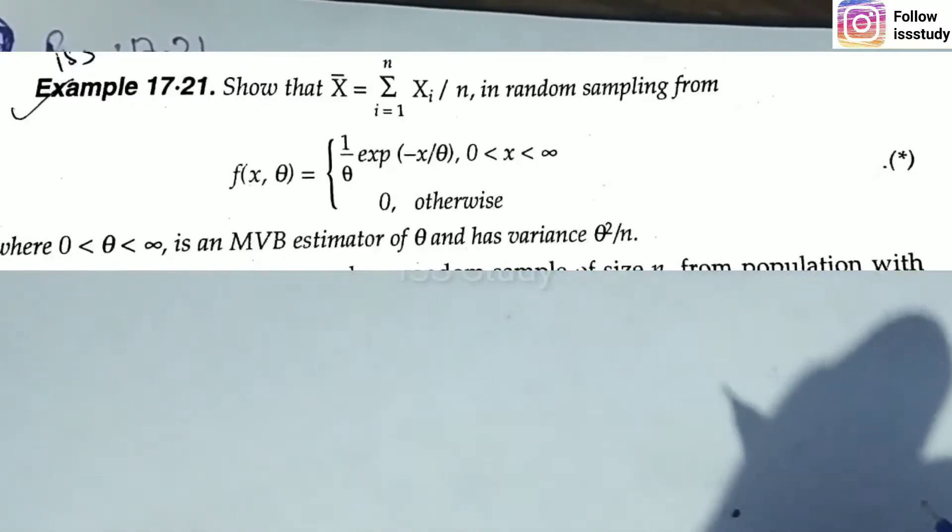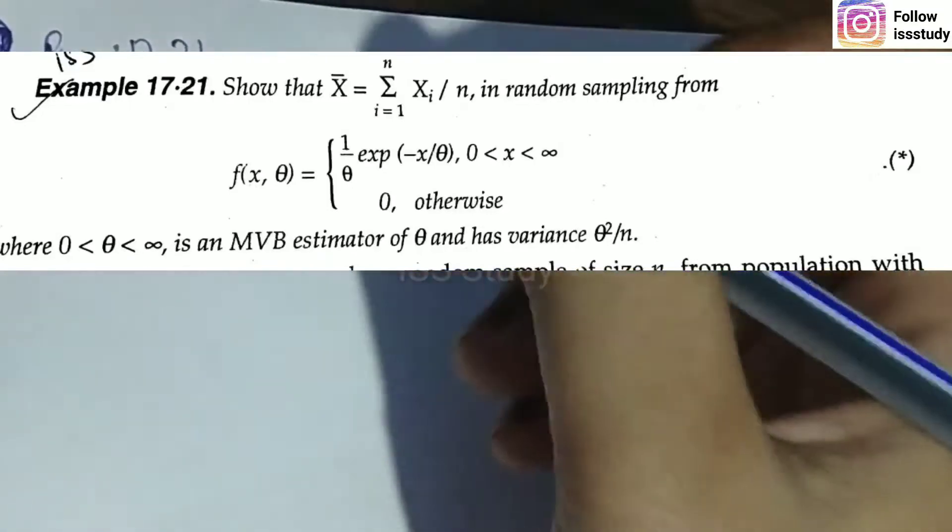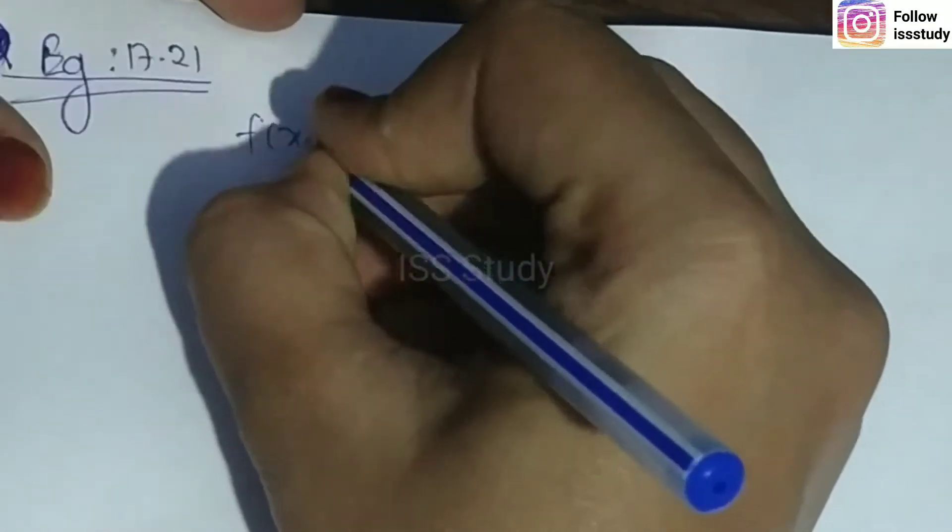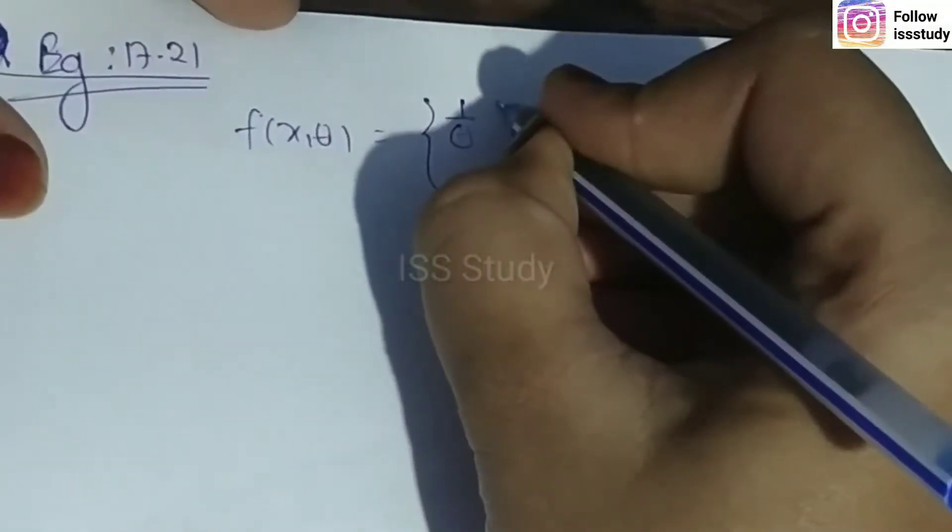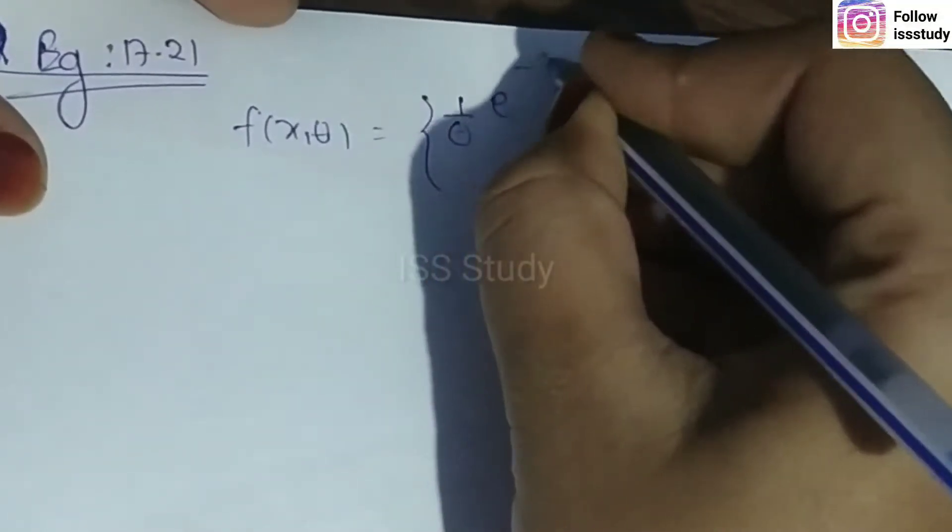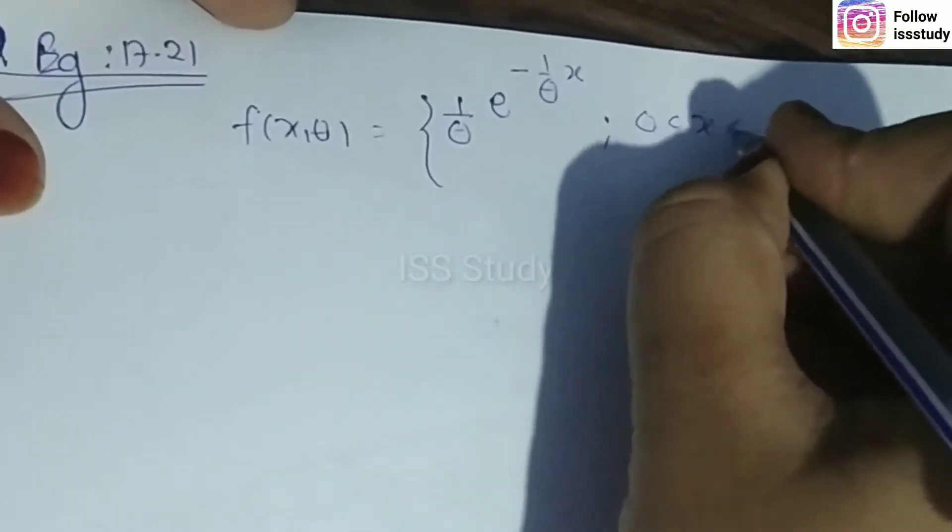So you can see which distribution is given. This is your exponential distribution: one upon theta, where the parameter is e to the power minus 1/θ times x. You already know these distributions. Here I have written the distribution.